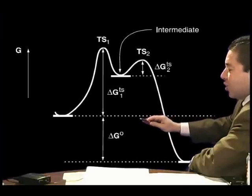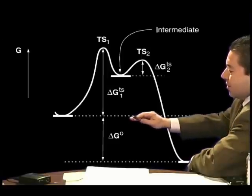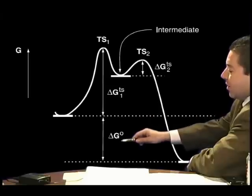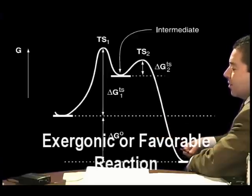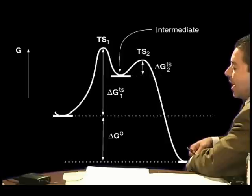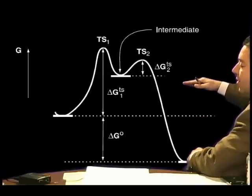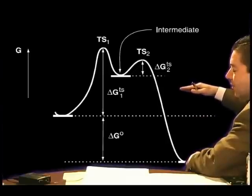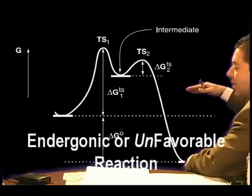If you have a reaction energy profile in which the product is at lower free energy than the reactants, namely a negative delta G-naught, final minus initial is negative, that is an exergonic or favorable energy. If the product is at higher free energy, and the delta G is positive, that would be endergonic, or unfavorable, or non-spontaneous reaction.